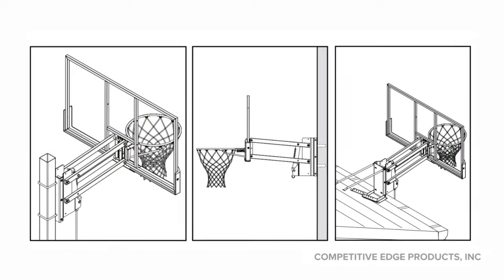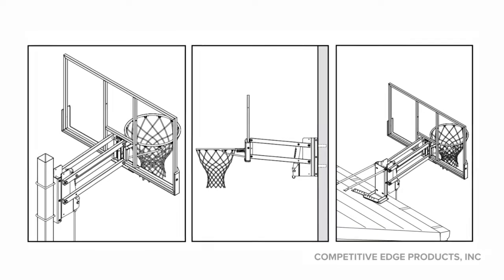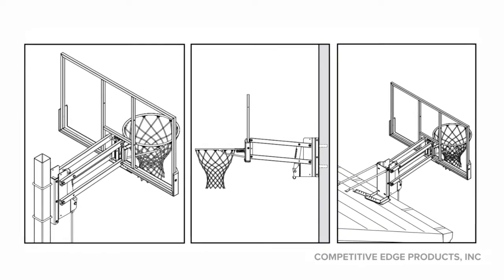This graphic here for example shows it mounted to a four inch square pole on the left, a flat wall in the center, and a pitched roof on the right.